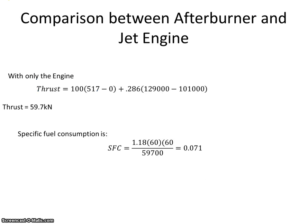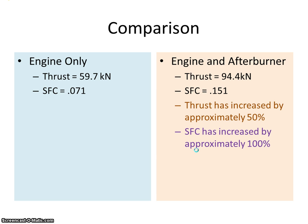Well, when we did the original engine in some of the previous videos, you'll see that the thrust was 59.7 kilonewtons and the specific fuel consumption was 0.071. So just compare the two engines. So that's what the thrust and specific fuel consumption was.